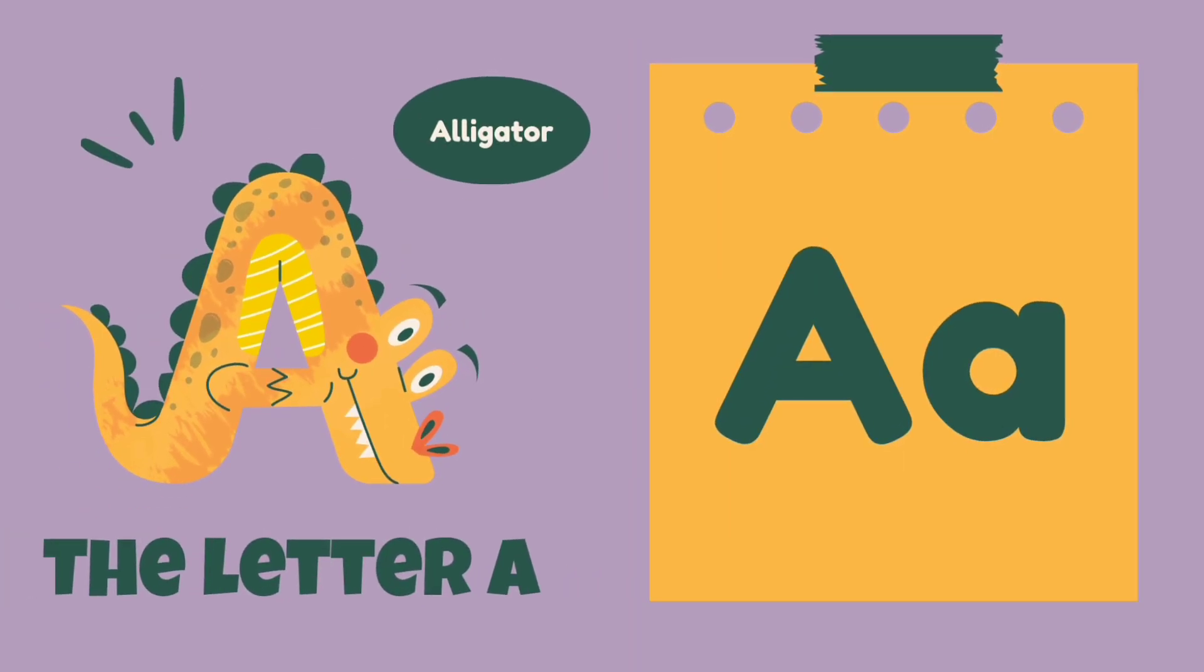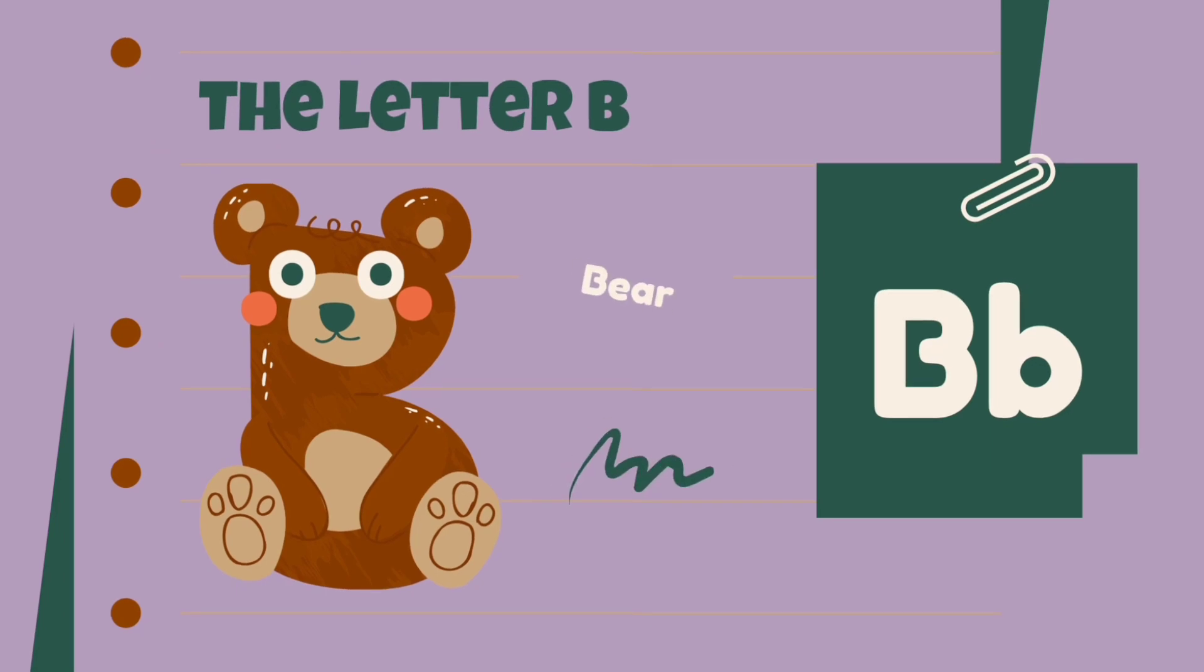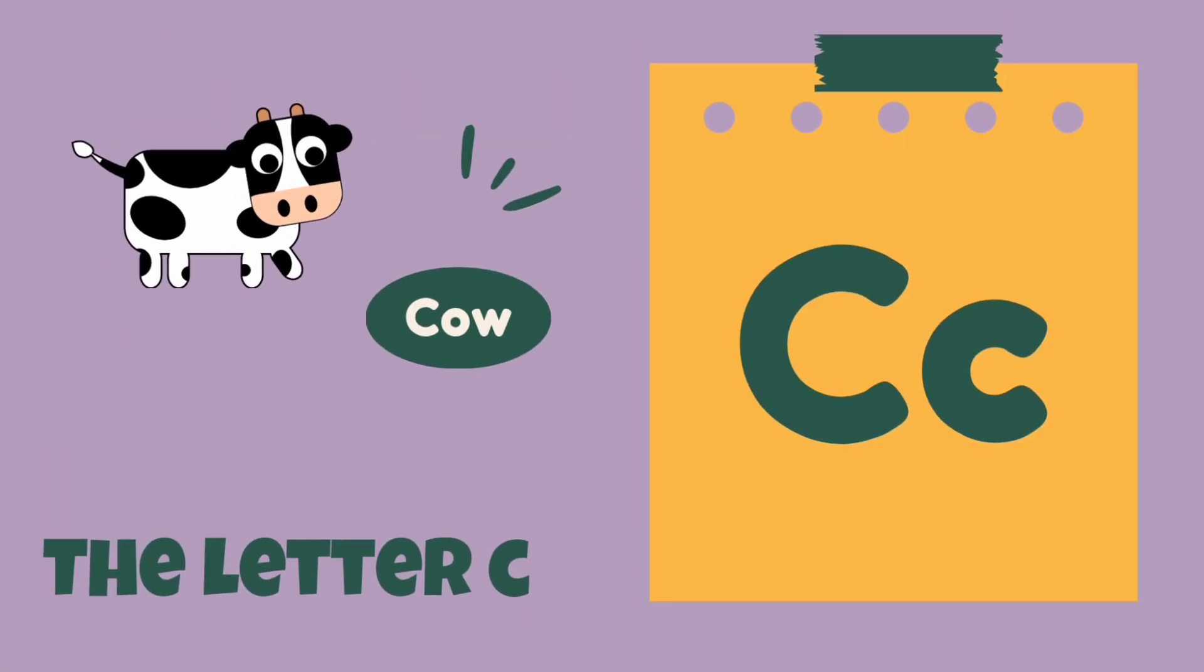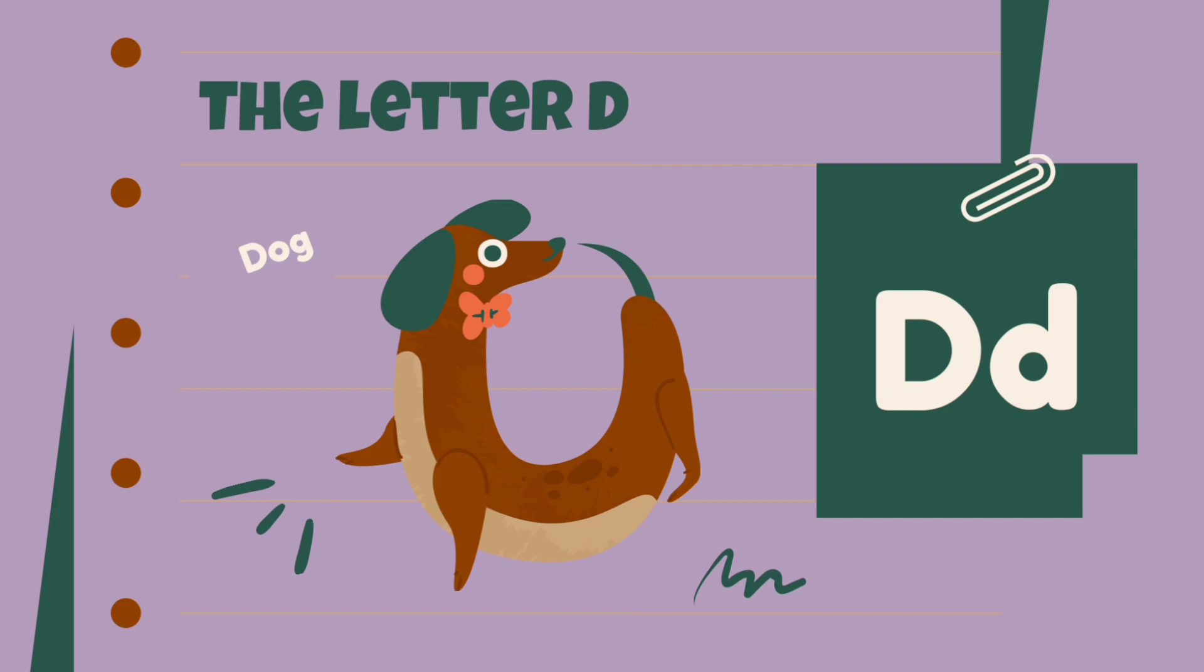A is for alligator, alligator. B is for bear, bear. C is for cow, cow. D is for dog, dog.